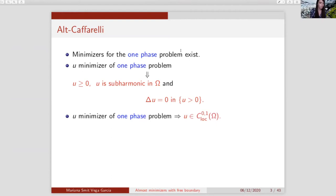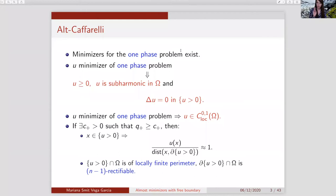When we get to the almost minimizers, one of the biggest challenges is that almost minimizers do not satisfy PDEs, so we really need to work hard since we don't have all the PDE techniques available. For the one-phase minimizing problem, the minimizer is locally Lipschitz. If we assume that q-plus is bounded away from zero, then a point on the positivity set satisfies u(x) over the distance to the free boundary being approximately one, meaning u grows like the distance to the free boundary as we approach it.